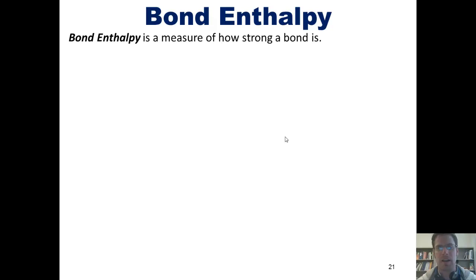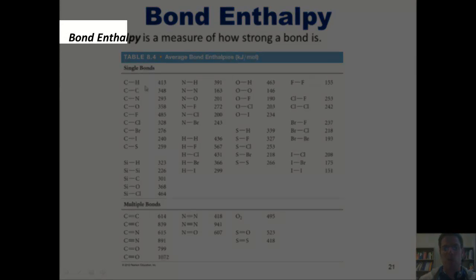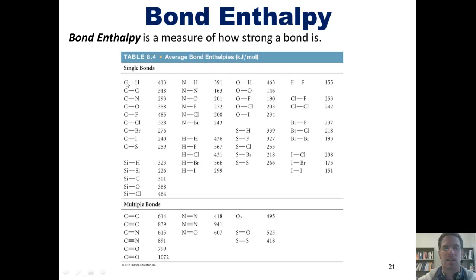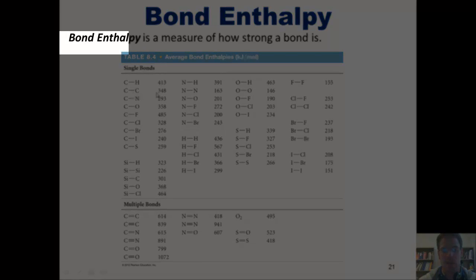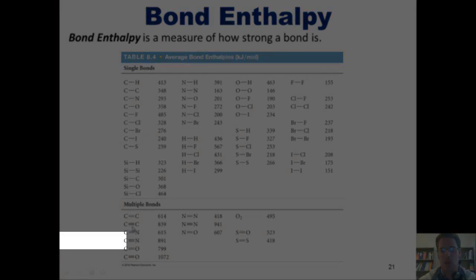We now arrive at this topic of bond enthalpy. Bond enthalpy is a measure of how strong a bond is. We can see that illustrated in this table. For example, a carbon-hydrogen bond, when it is combusted, gives off 413 kilojoules per mole per carbon-hydrogen bond. Similarly, a carbon-carbon single bond is worth 348 kilojoules per mole, while a carbon-carbon double bond is worth 614. Not surprisingly, a carbon-carbon triple bond goes up to 839.